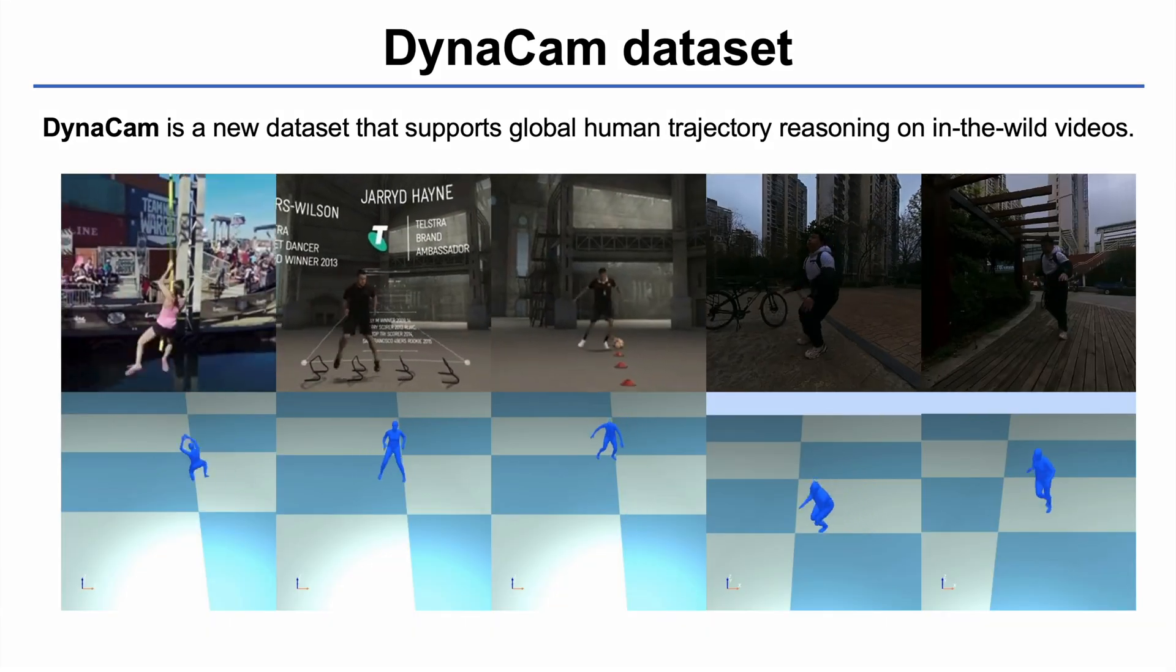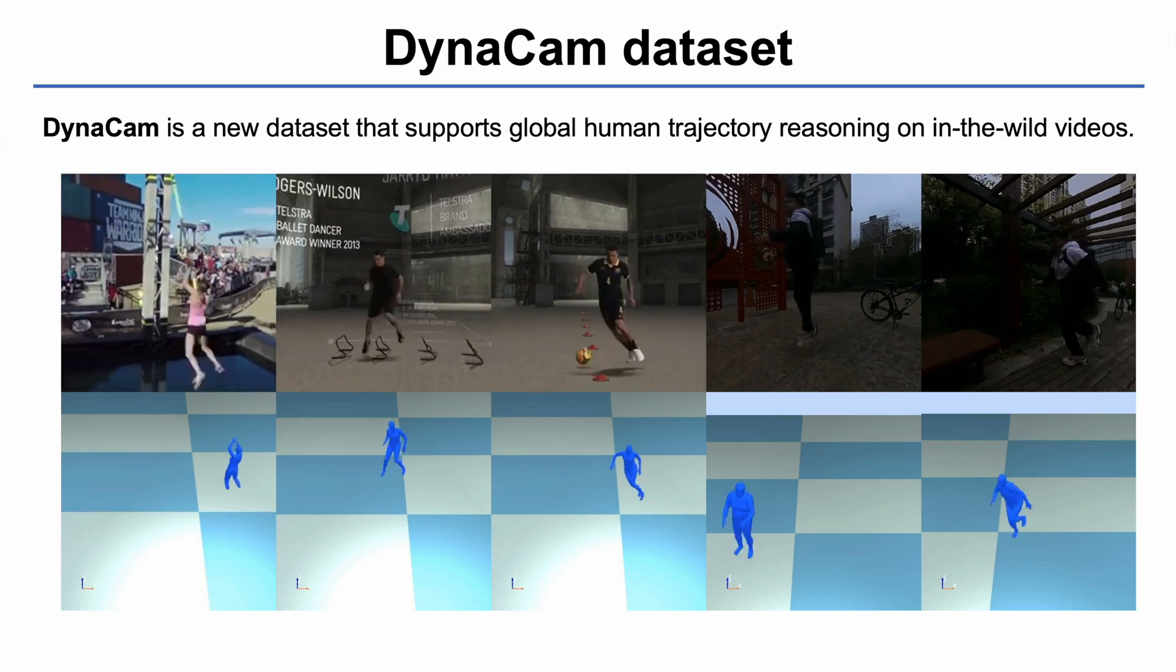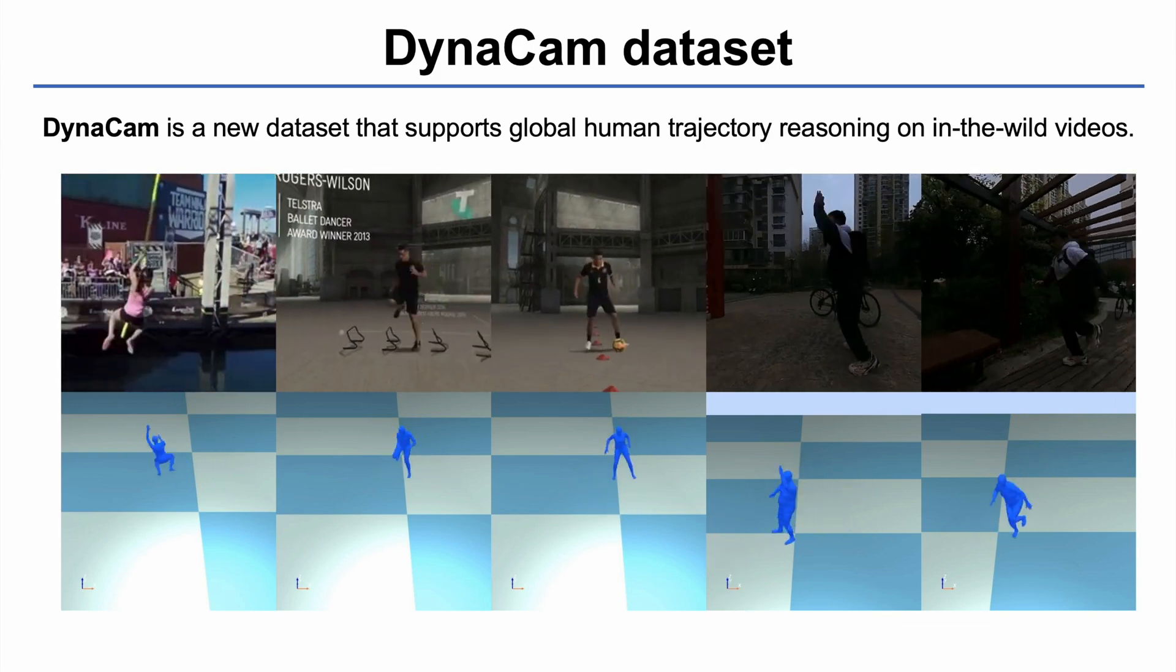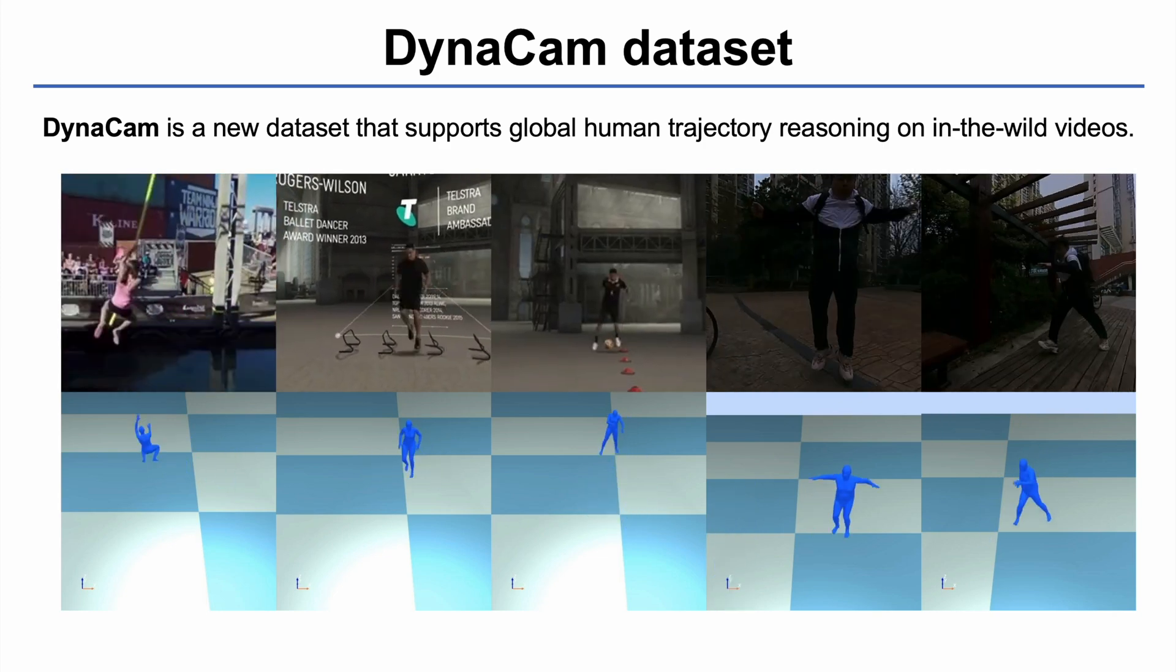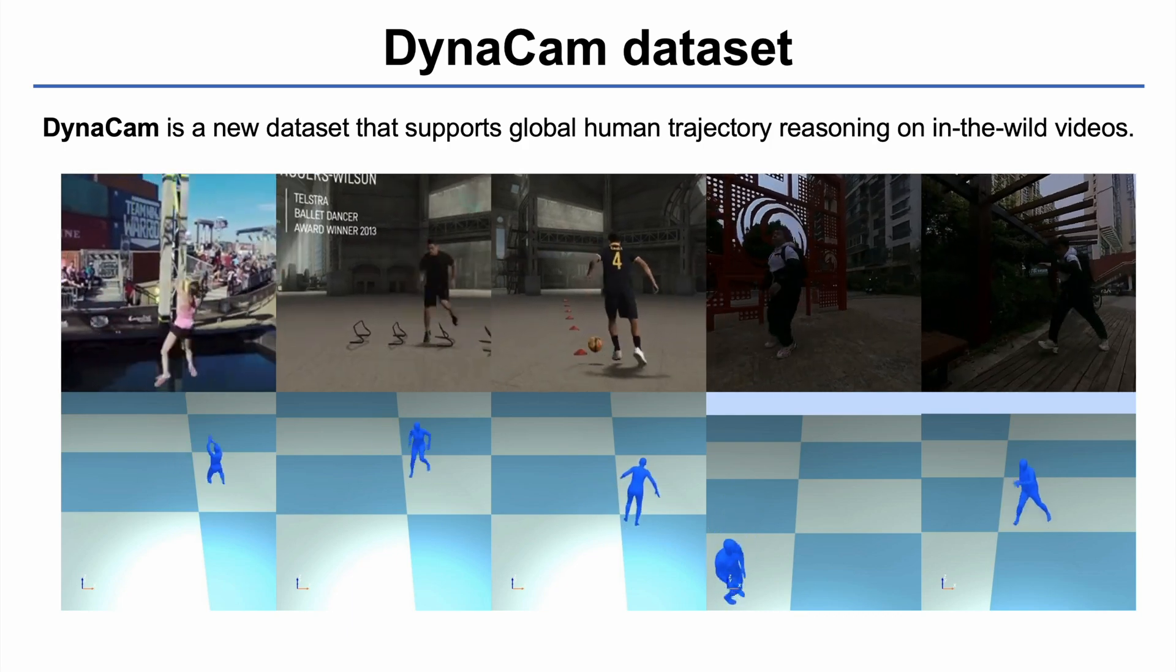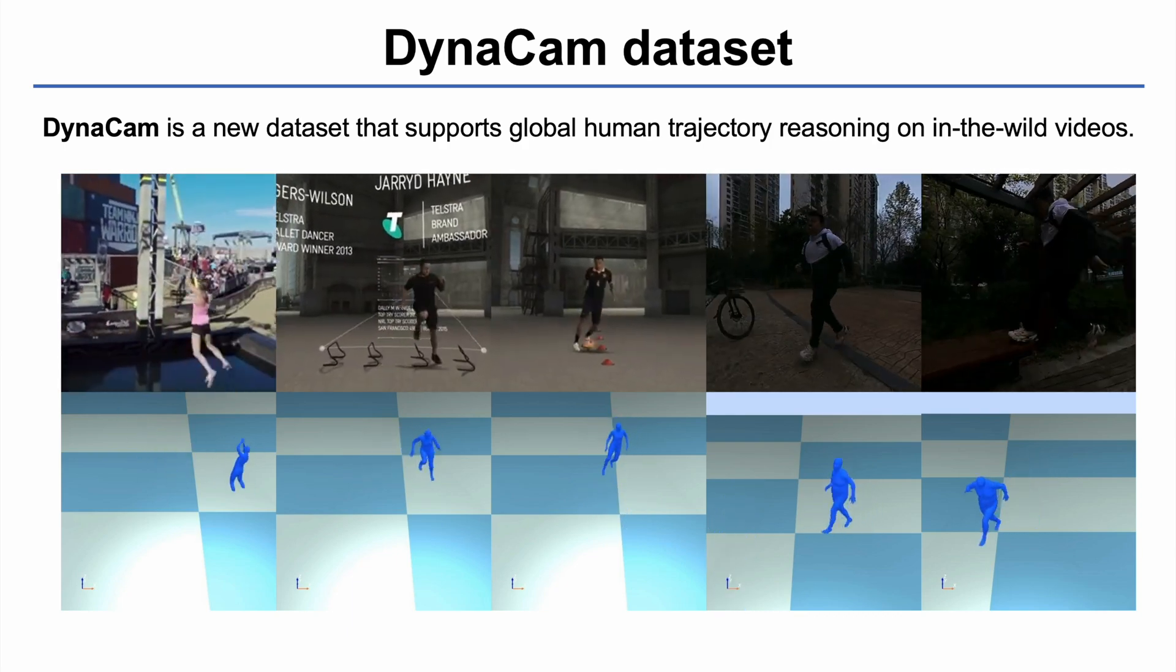Then we generate pseudo-ground truth 3D human annotations via fitting SMPL to detected 2D pose sequences. With pseudo-human poses and camera pose annotations, we obtain the global human trajectories using the PnP algorithm.